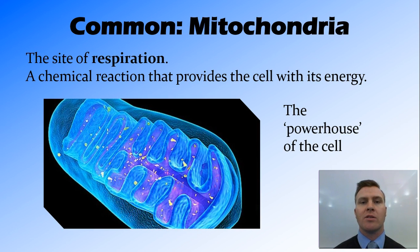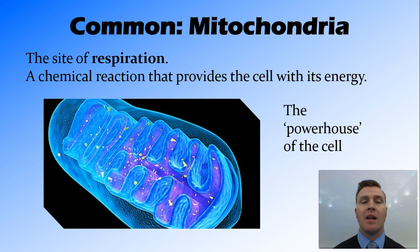Mitochondria are also common to both plants and animals, and they're very important because that's where respiration occurs. Respiration is a very important reaction in living things, which provides the cell with the energy it needs to perform all its functions. We refer to the mitochondria as the powerhouse of the cell. As mentioned, mitochondria cannot be seen under a light microscope — they can only be seen under an electron microscope — but they're included here because they are super important.